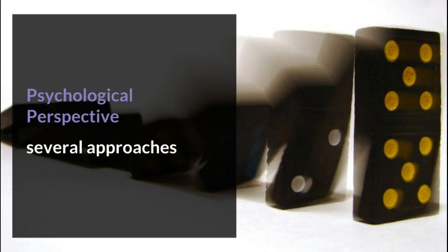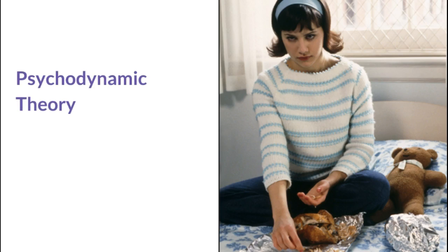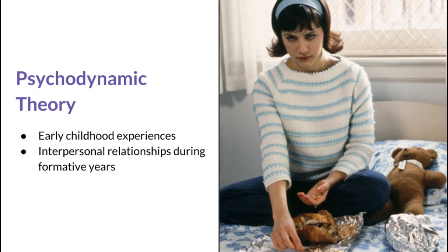Now let's turn to the psychological perspective. The psychological perspective on abnormal behavior arises from several different approaches, such as psychoanalytic, behavioral, and cognitive. The first specific cause is related to psychodynamic theory. Recall that psychoanalytic theory focuses on early childhood experiences. This approach views the role of family dynamics and interpersonal relationships during formative years as important in the development and maintenance of eating disorders. In the film Girl Interrupted, the character of Daisy appears to have been sexually abused as a child, which may be one contributing factor to her eating disorder.